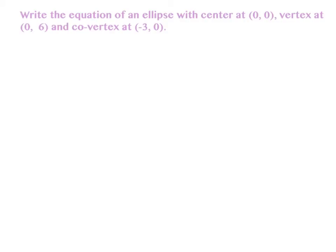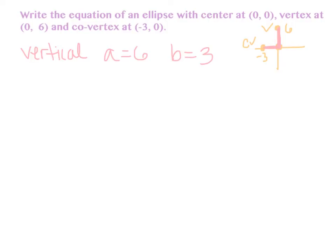In this example, we're going to write the equation of an ellipse with a center at (0, 0), a vertex at (0, 6), and a co-vertex at (negative 3, 0). It always helps to sketch a quick picture. Center at (0, 0), vertex at (0, 6), and co-vertex at negative 3. Just by looking at that, the vertex is on the Y-axis, so it is vertical. This gives me an A value of 6 and a B value of 3. H and K are both 0, so we have all the letters we need to fill in the equation.